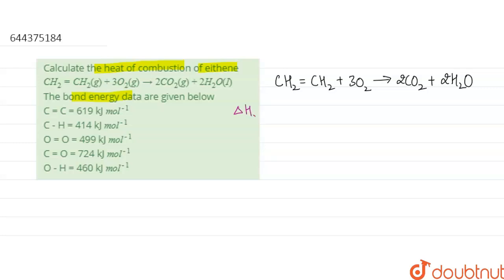Delta H for the reaction is the summation of bond energy of the reactant side minus the summation of bond energy of the product side.